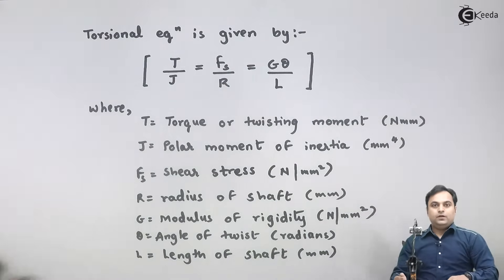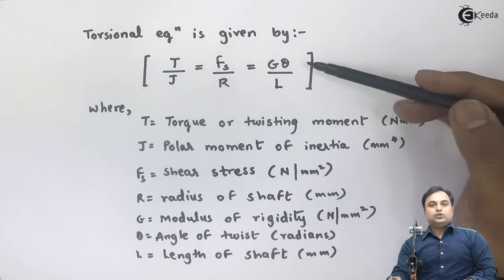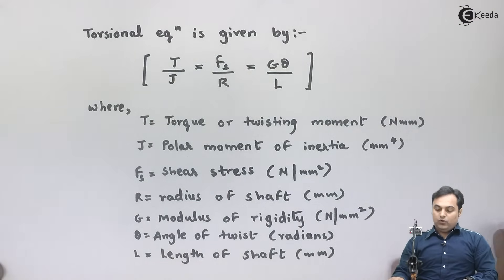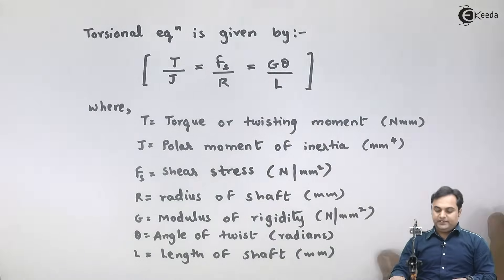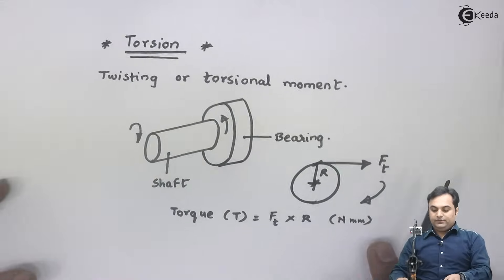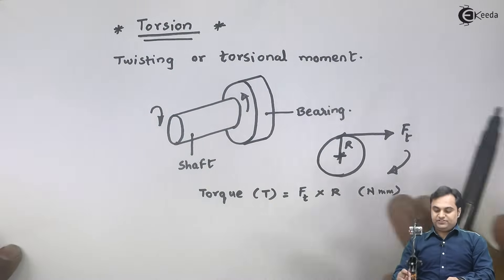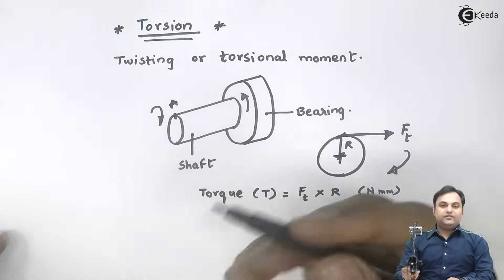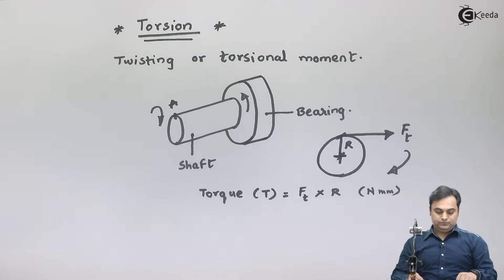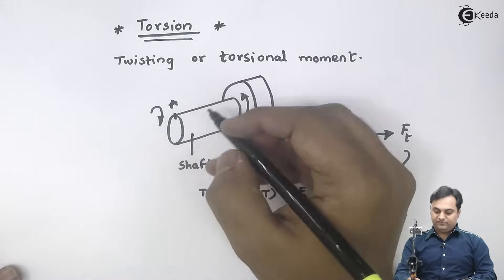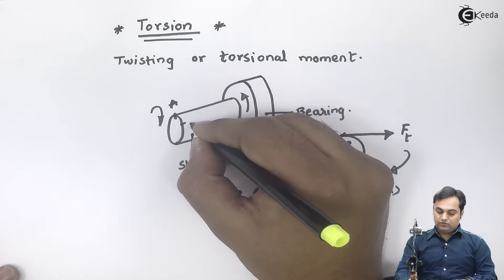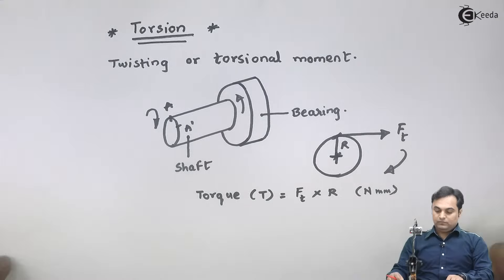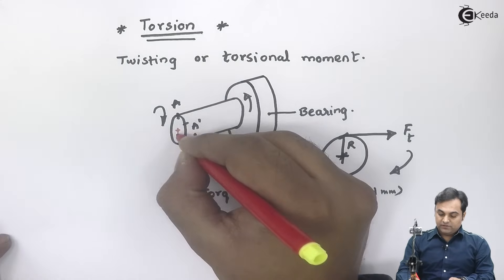Theta is angle of twist, unit will be radians, and capital L indicates the length of shaft in mm. So this is the torsional equation which we have, and here I have defined all the terms. Now this angle of twist can be explained in such a way that if we have this diagram of a shaft, I consider point A on the shaft, and when the twisting occurs, this point A will be shifted to another location called as A dash.